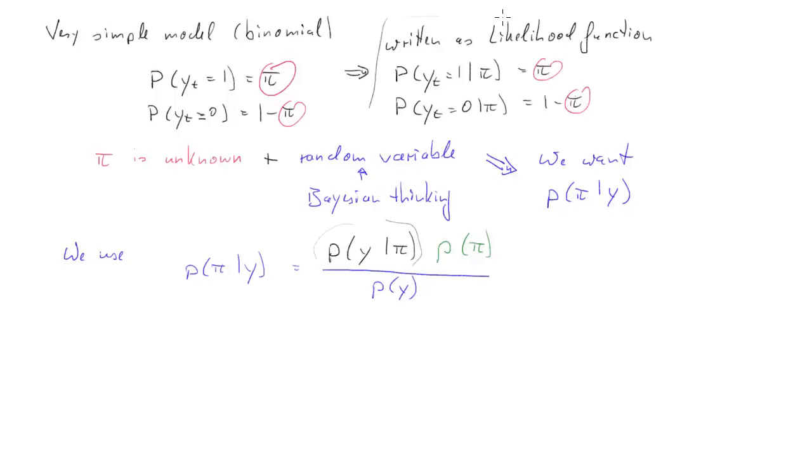What are all these things we're looking at here? What we already know is this one, probability of Y conditional on pi. This is just our likelihood function. This is what will be called the prior distribution. This one here will be called the posterior distribution of pi. And this one is what is called the marginal distribution of Ys of the data.